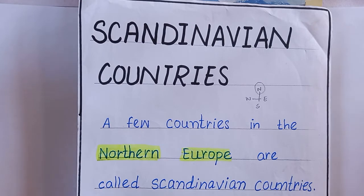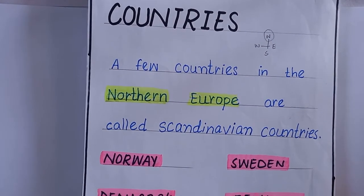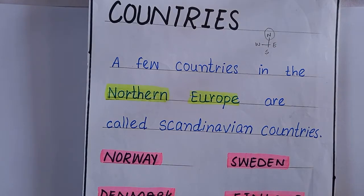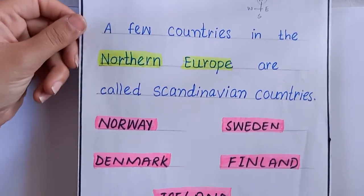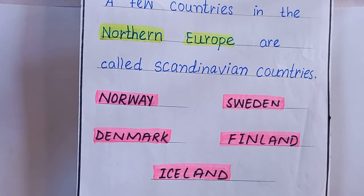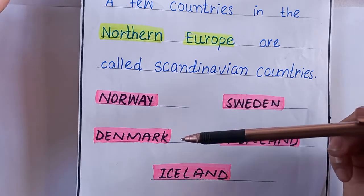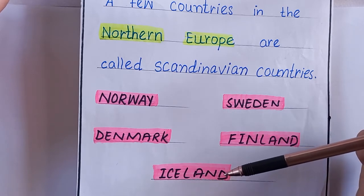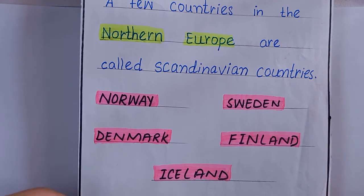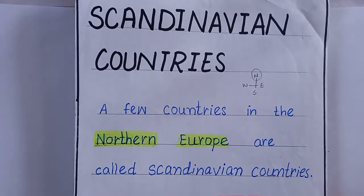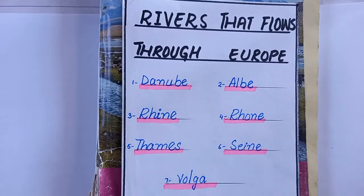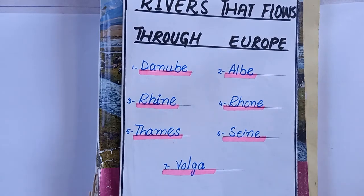What are Scandinavian countries? Scandinavian countries are a group of countries located in northern Europe. A few countries in northern Europe are called the Scandinavian countries. There are total five Scandinavian countries: Norway, Sweden, Denmark, Finland, and Iceland.